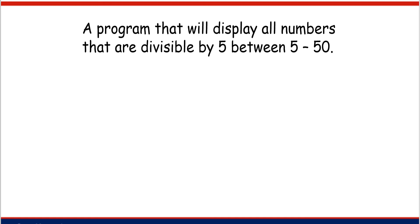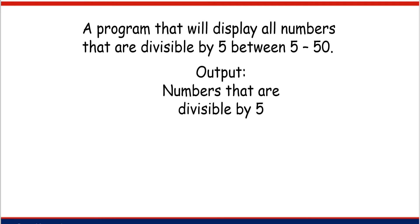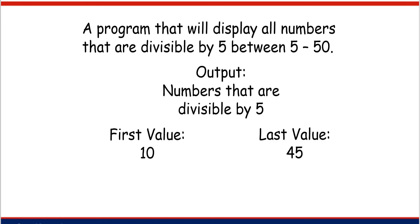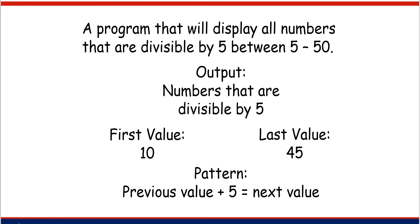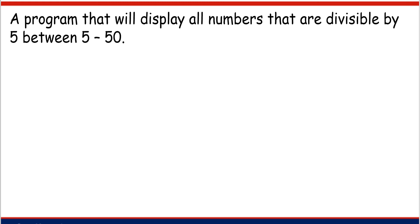For our third example, a program that will display all numbers divisible by 5 between 5 and 50. The outputs are all numbers divisible by 5 between 5 and 50. The first value is 10 because 5 is not included — the problem says numbers between 5 and 50. The last value is 45. The pattern is previous value plus 5 equals the next value.